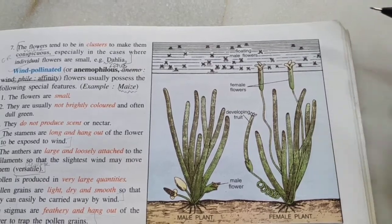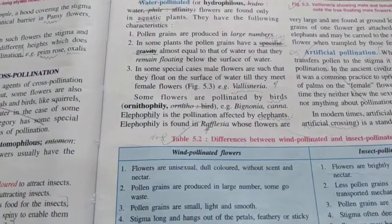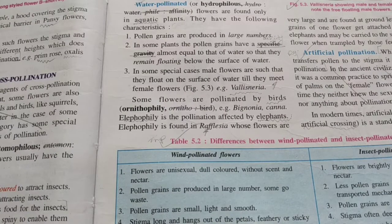There are many other methods of pollination. For example, birds may help in pollination, which is called ornithophily. Elephants can help in pollination, which is called elephophily, and this happens in the largest flower on earth, the Rafflesia flower.